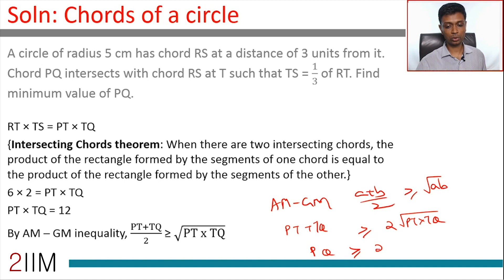PQ is greater than or equal to 2 times root 12. 2 times root 12 is 4 times root 3. PQ is greater than or equal to 4 times root 3, or the minimum value of PQ is 4 root 3.